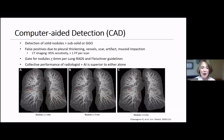CAD is most commonly used as a second reader to improve efficiency in detecting nodules or to alert a radiologist of an abnormal scan. CAD programs are generally better at detecting solid nodules over part-solid or ground glass lesions, and false positives can occur from normal findings. Most commercially available programs today demonstrate around 95% sensitivity for nodule detection on CT with less than one false positive per scan.